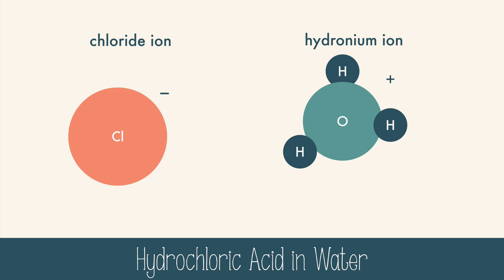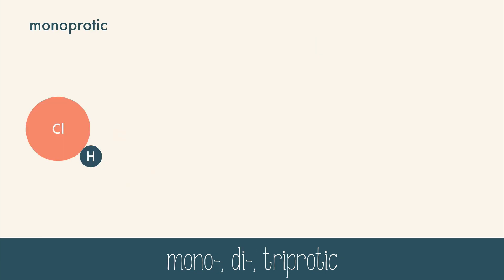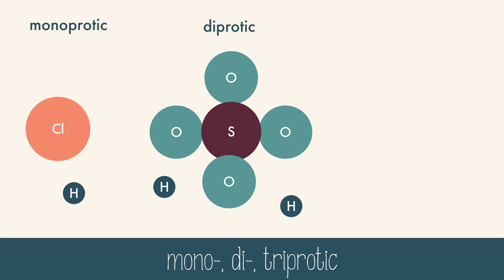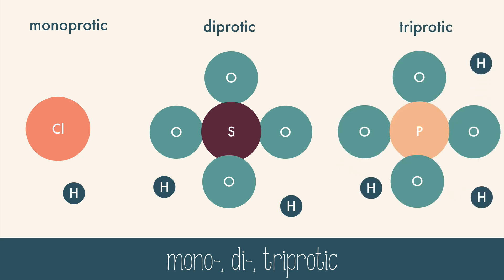Because hydrogen can be removed as an ion, hydrochloric acid is ionizable. Hydrochloric acid releases one hydrogen, so it's called monoprotic. Some acids have multiple hydrogen atoms that will ionize and could be diprotic if they release two hydrogen ions, like sulfuric acid, or triprotic if they release three hydrogen ions, like phosphoric acid.